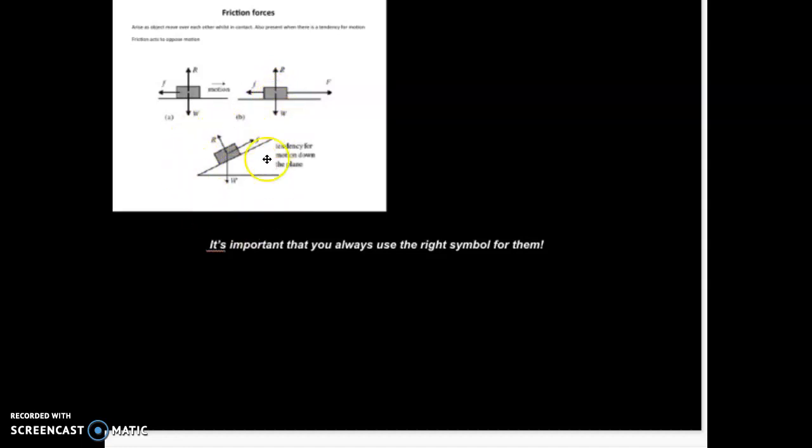This is a nice one, a slope one, where you can see the weight is acting straight down. Friction is acting in opposition to motion, which is down the slope. And here we have our normal force, which is perpendicular to the surface. All of these are important points.